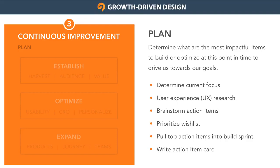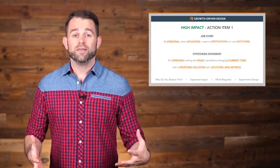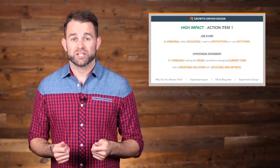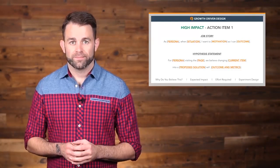With those high-impact action items in hand for your current sprint, you'll write out action item cards, which has four different elements. One, you outline a specific customer scenario in the form of a job statement. Two, a hypothesis statement about the proposed change and the impact it will have. Three, any research or data that will help back up that hypothesis. And four, the experimental design of how you plan on testing that hypothesis. Now that you have a focused and prioritized list of action items, you can move to the second step in the continuous improvement cycle: the build step.